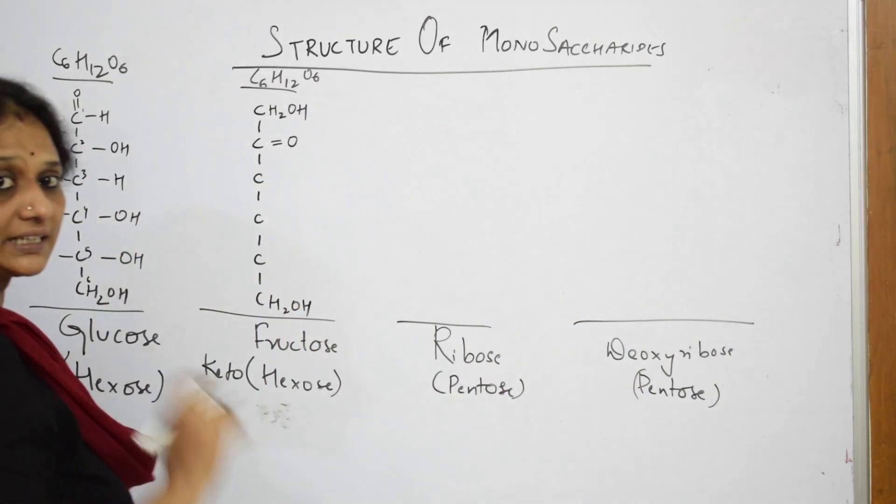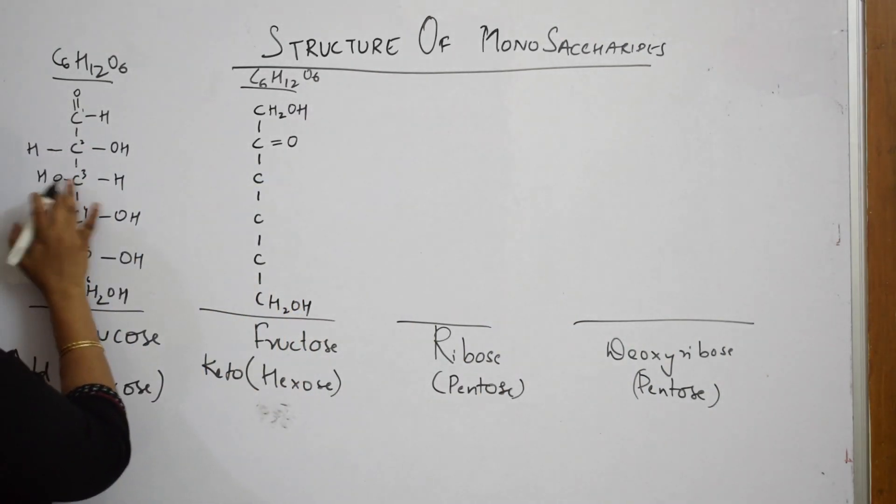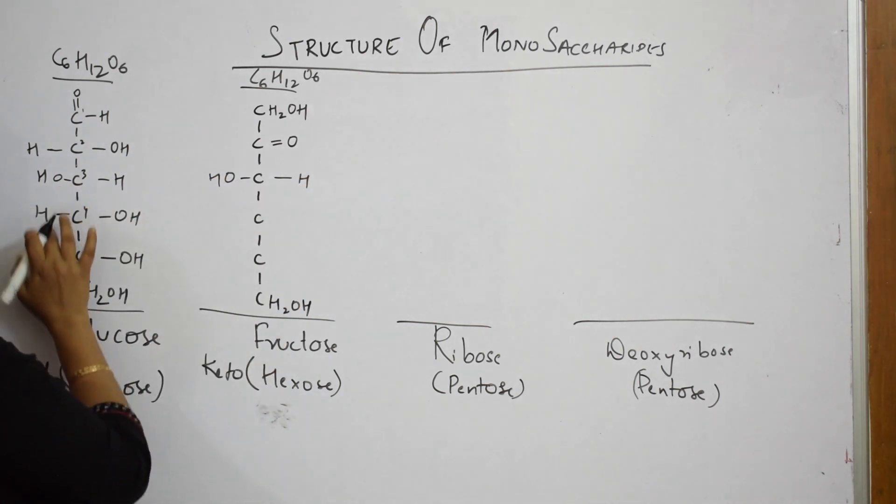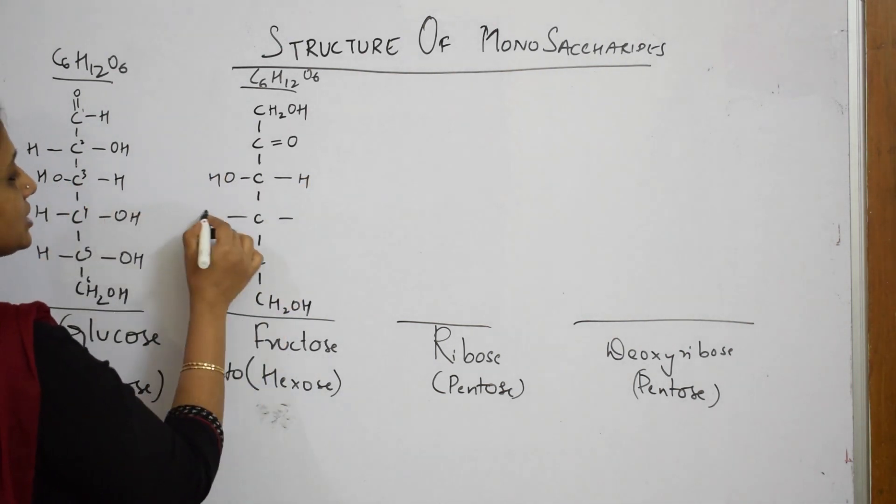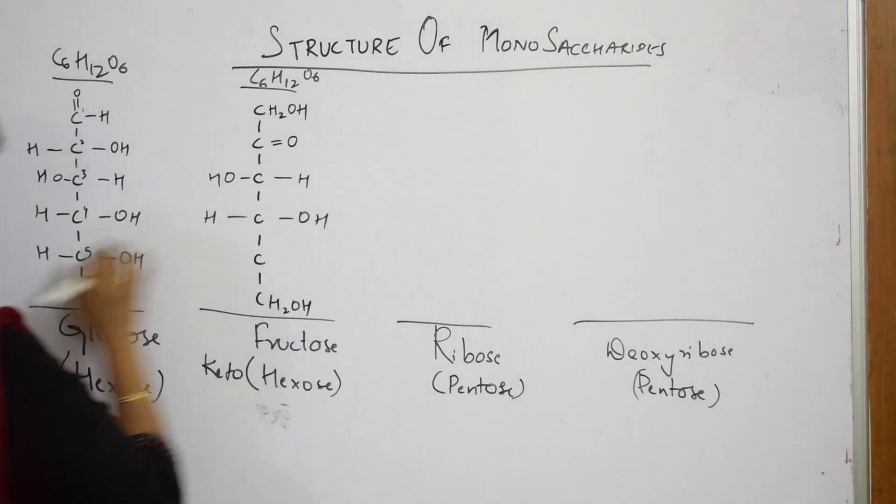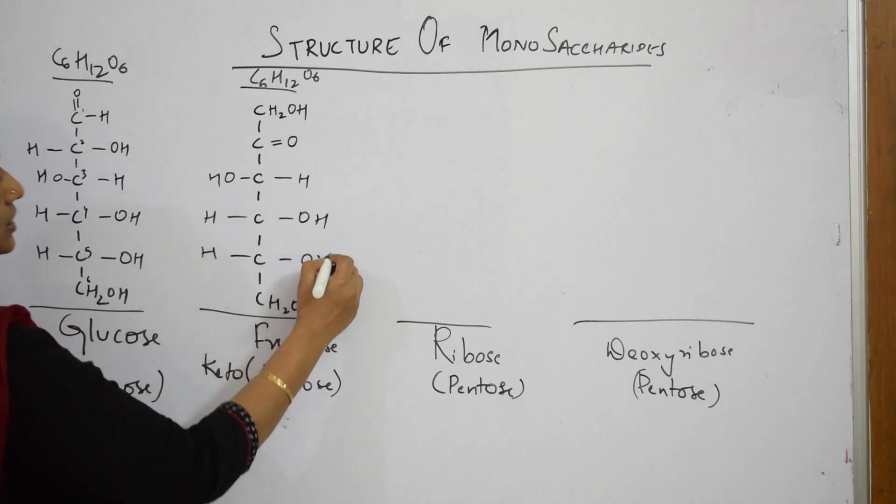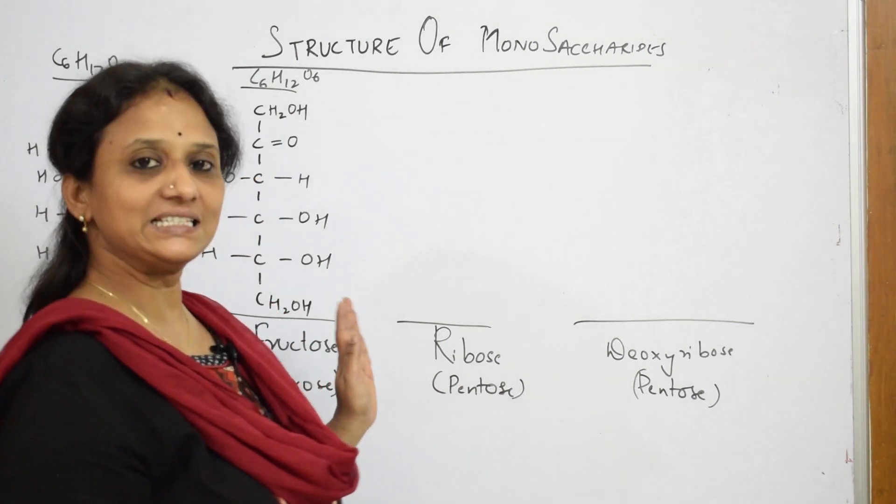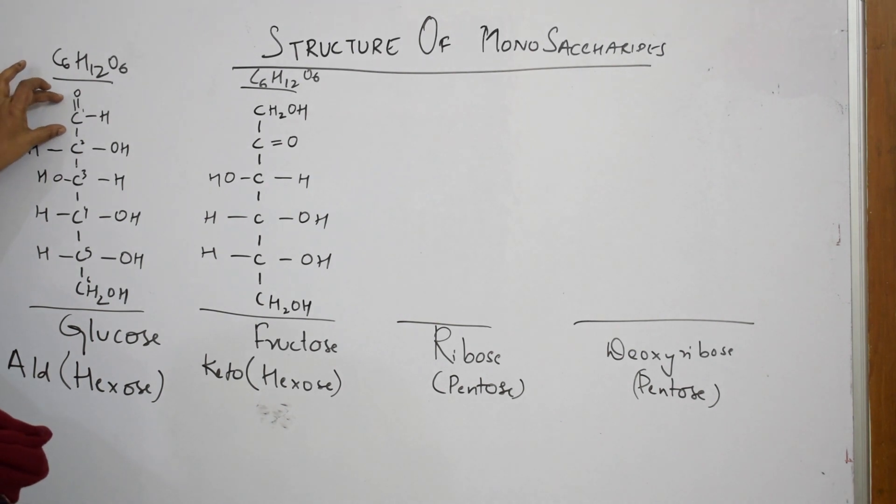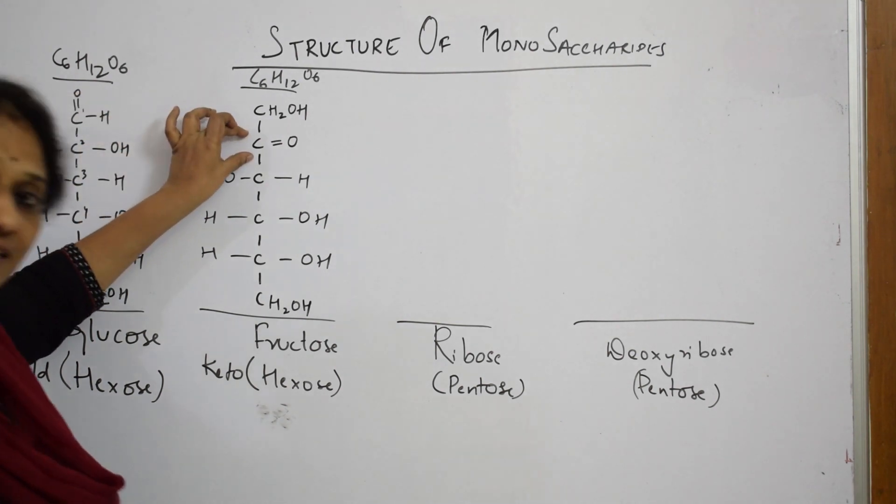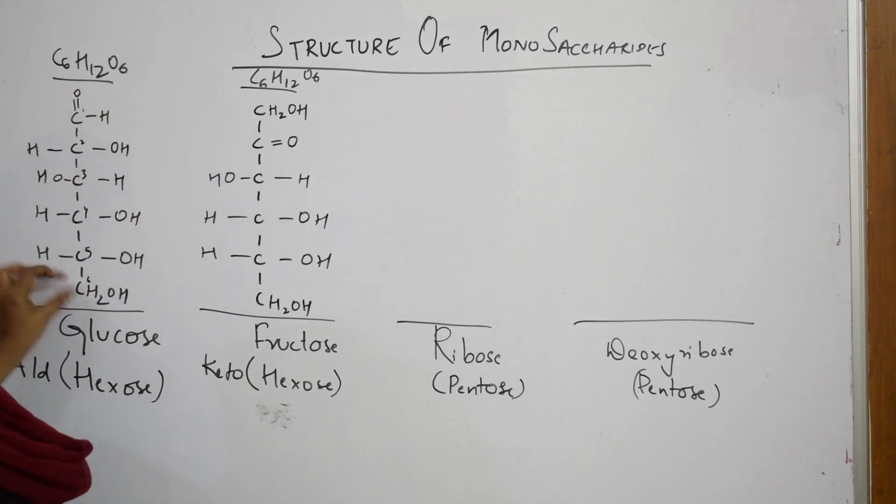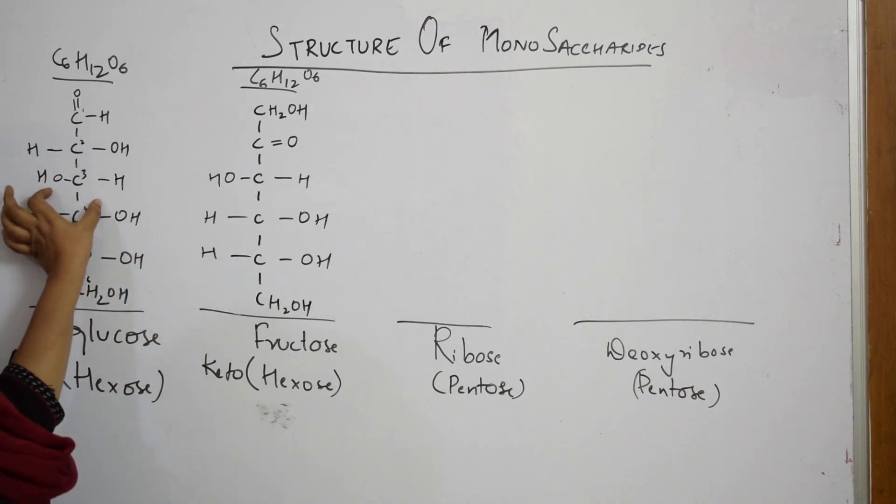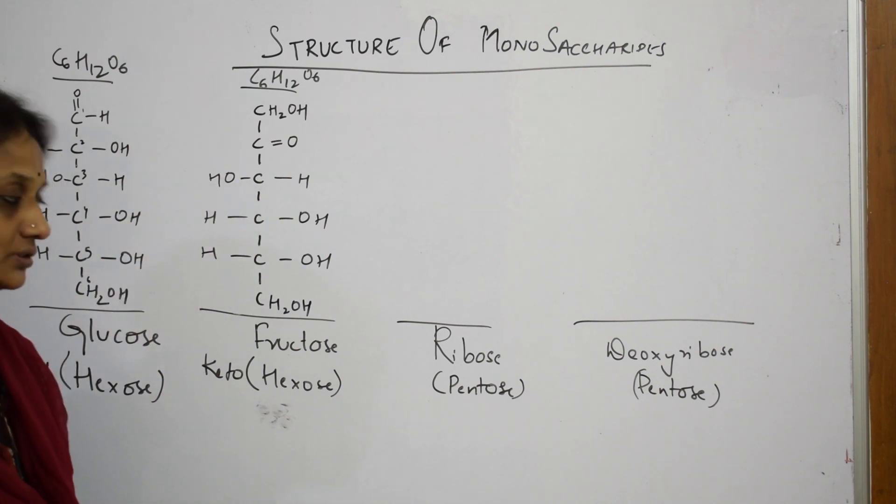From third carbon, it's the same. Your third carbon has OH and H. Fourth carbon, H and OH. Fifth carbon again, H and OH. Sixth carbon already done. Here, first carbon is aldehyde group. Here, second carbon is ketone group. Last carbon is CH2OH and here, the last carbon is CH2OH and the third is OHH and the third is OHH.